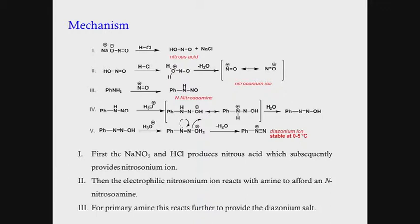The nitrosinium ion is responsible for further reactions. Aniline attacks this electrophilic nitrosinium ion to give N-nitrosoamine. Since this is a primary amine, another proton is available for further reaction — protonation followed by water elimination gives a phenyl N=N-OH compound, which is again protonated. Since water is a good leaving group, this gives the diazonium ion — the diazonium salt with chloride — which is stable at 0 to 5 degrees centigrade.